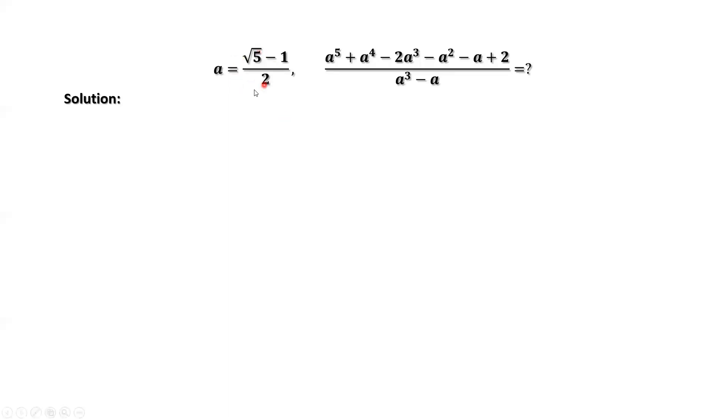We square both sides of this given condition. The right hand side equals 3 minus square root of 5 over 2. We want to rewrite this part in terms of a. Rewrite the right hand side as 1 minus square root of 5 minus 1 divided by 2. The second part is a.